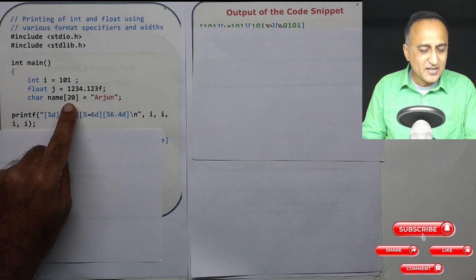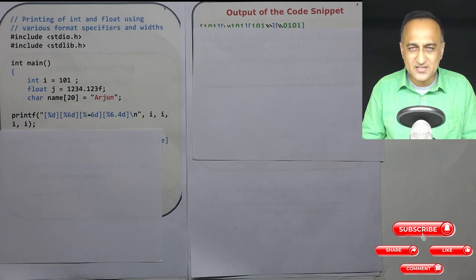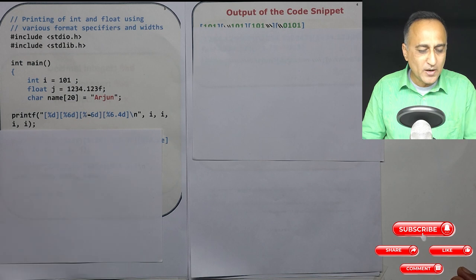Here what I have done is I have taken a name. The maximum name I can have is of 19 characters because one character is reserved for indicating the end of the name. And here I have given it the initial value Arjun.